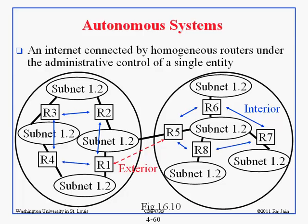Inside an AS we have many subnets — each subnet is an Ethernet or something like that — and many routers. Some of these routers do not talk to outsiders; some of them do. The ones that talk to outsiders are called exterior routers; the ones which are inside are called interior routers. Interior routers speak the interior routing protocol, and exterior routers speak the exterior routing protocol.